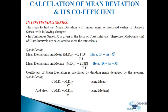Symbolically: mean deviation from mean MD(mean) = sigma f·d / sigma f, where d = m (midpoint) − mean. Mean deviation from median MD(m) = sigma f·d / sigma f, where d = m − M (small m = midpoint, capital M = median). Coefficient of mean deviation: C·MD = MD(mean)/mean, and C·MD(m) = MD(m)/M.